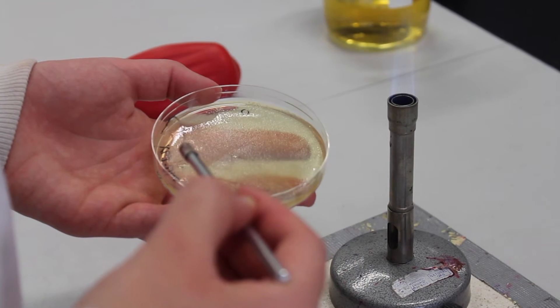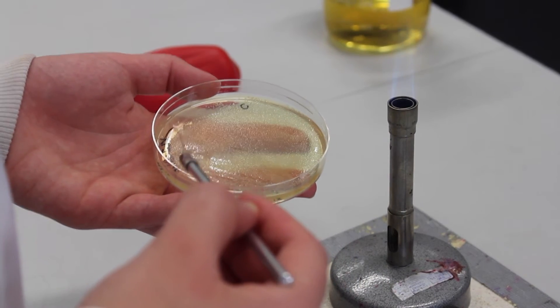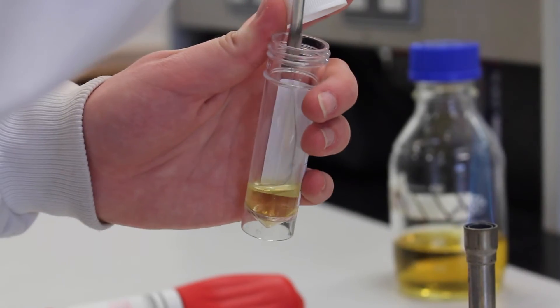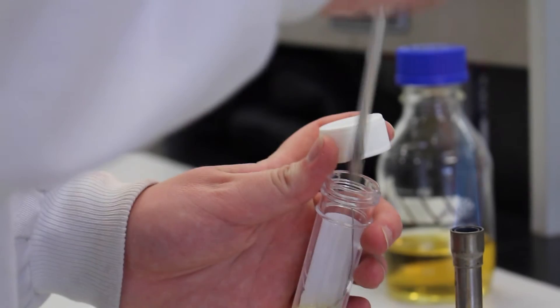The loop is further cooled on a part of agar that does not contain colonies. A single colony is then scooped up. The colony is transferred to the tube containing SOB medium.